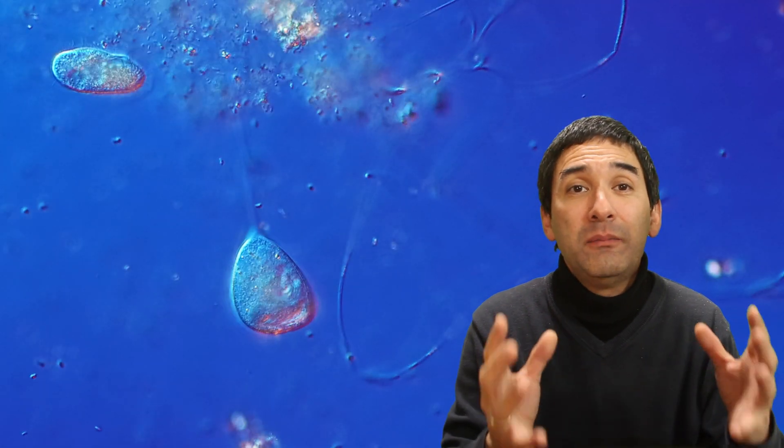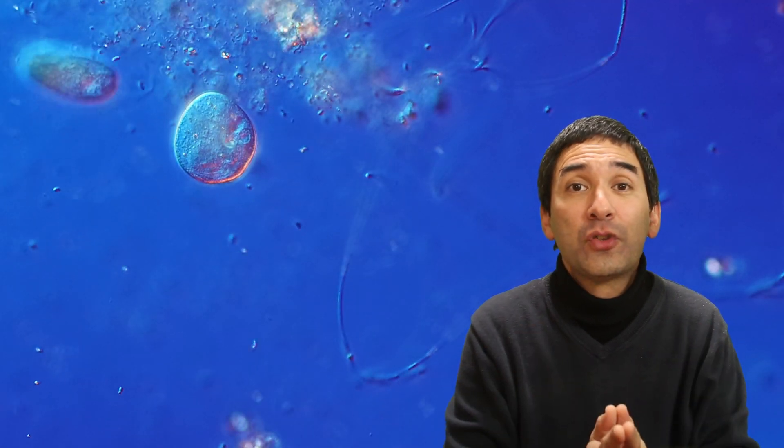Now, paramecia are oval-shaped and can move around using the cilia, but the vorticella, they look quite different. They have this bell-shaped structure, and in many cases, they are attached to a surface.